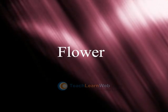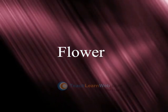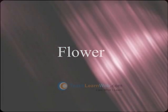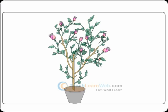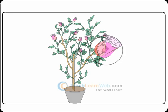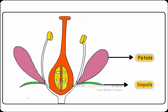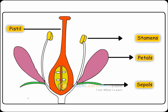Flower. It is the most attractive part of the plant. It comprises of petals, sepals, stamens and pistil.